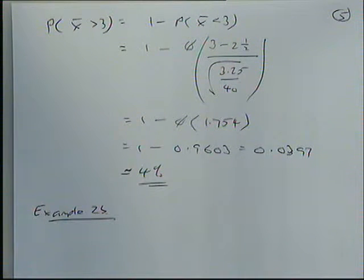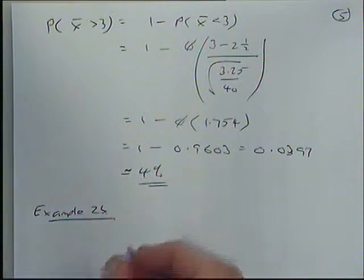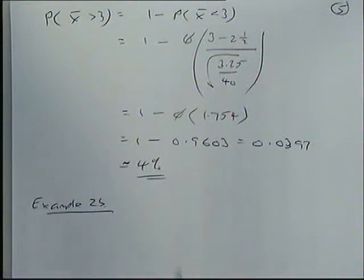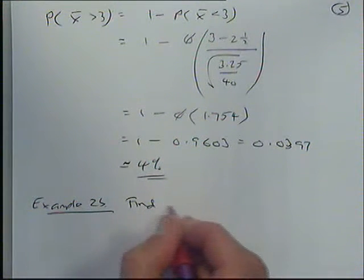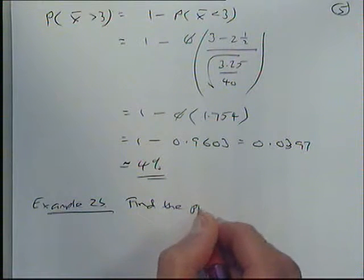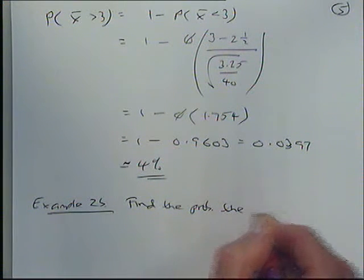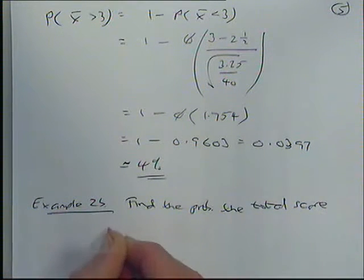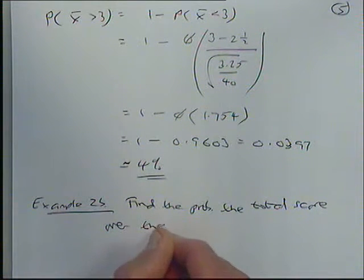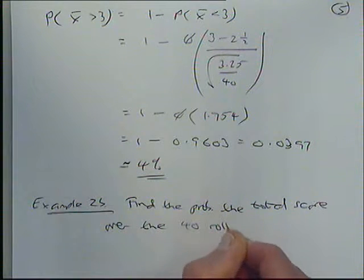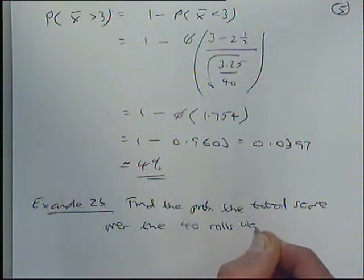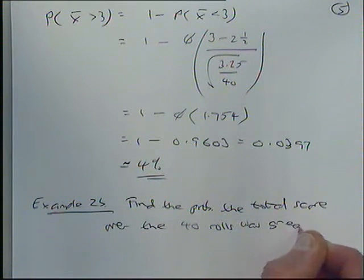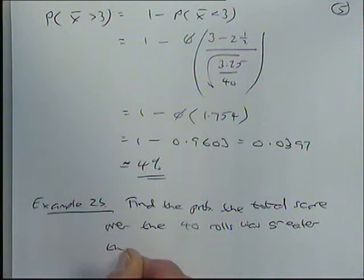Right, before we leave this question, example 2b, I'm going to change the question here. It's the same scenario, but it's going to be find the probability that the total score over the 40 rolls was greater than 120.